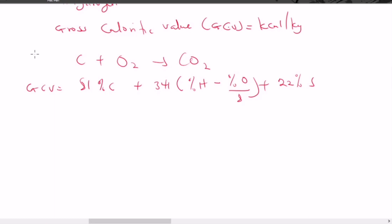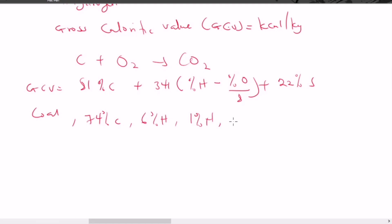We are supposed to calculate the gross calorific value for a coal sample with the following composition: 74% carbon, 6% hydrogen, 1% nitrogen, 9% oxygen, 0.8% sulfur, and 22% moisture.